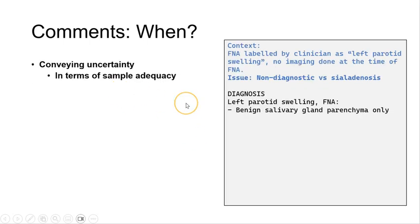When we are trying to convey uncertainty in terms of specimen adequacy, the context is the finding of only benign salivary gland parenchyma in the FNA. And the FNA is labeled as a left parotid swelling, so we don't have imaging done yet.